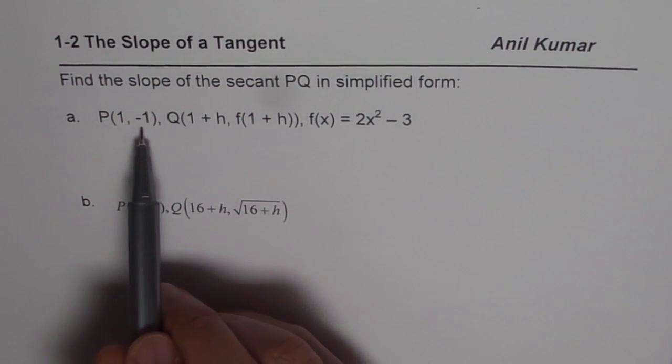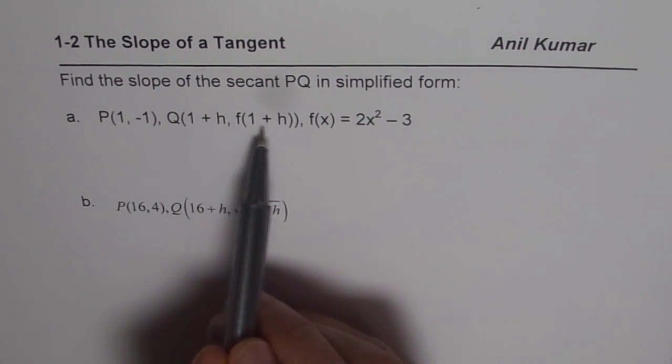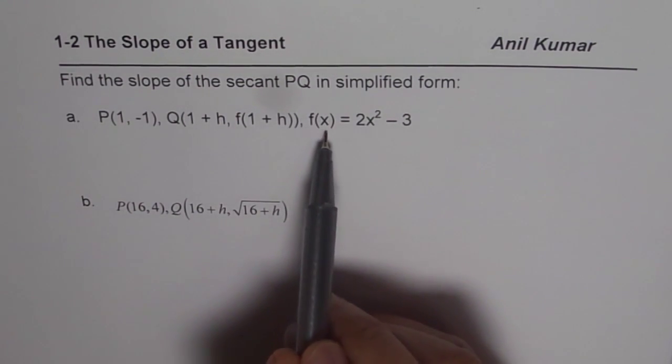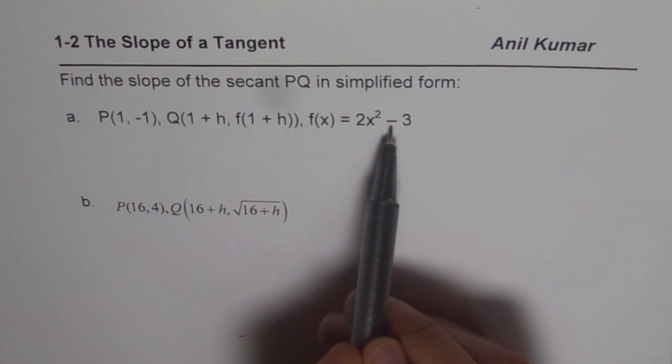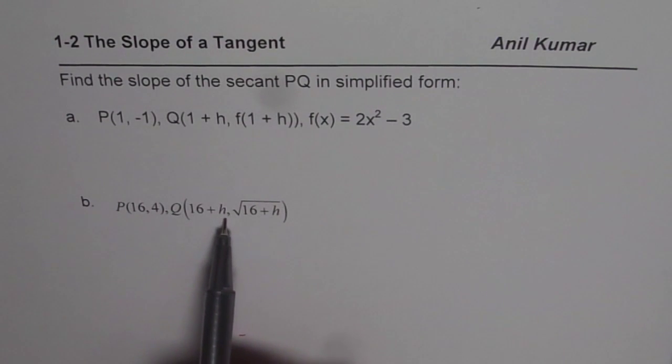P is (1, -1), Q is (1+h, f(1+h)), where function f(x) is defined as 2x²-3. Part b is P(16, 4) and Q is (16+h, √(16+h)) is the y value.